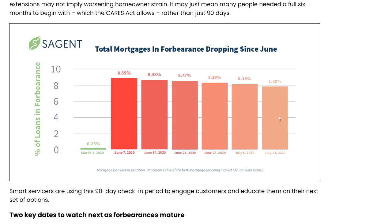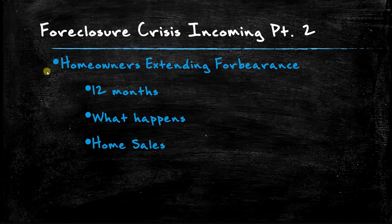Zillow lists about 1.5 million houses for sale right now. So what happens when these people's forbearance periods stop extending and their foreclosure moratoriums run out? Let's say half of those 2.25 million people come on the market — that's roughly 1 million houses. That's like 70% more inventory hitting the market over the next year. That's going to drive prices through the floor, take time-on-market way up, and people will be stuck unable to sell.